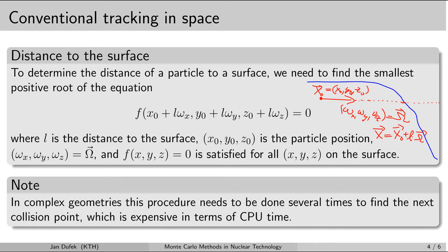We need to solve this equation for the l parameter. When you look at it, the l parameter is the only unknown quantity in this equation because we know x0, y0, z0, that is the starting point, and then we know omega x, omega y, omega z because that is the directional vector of our neutron. So we have to find the root for this f function. We have to find the smallest positive root for the l parameter here.